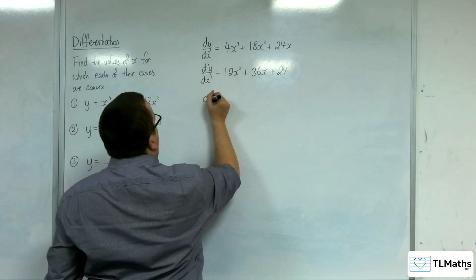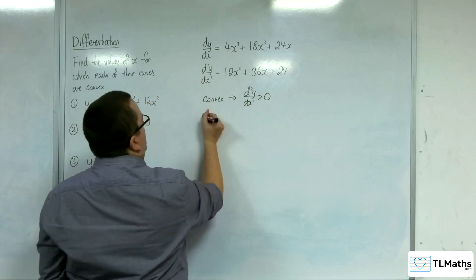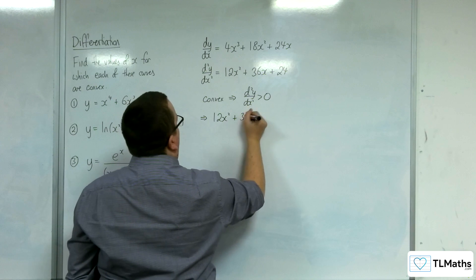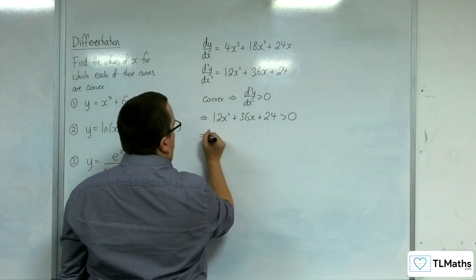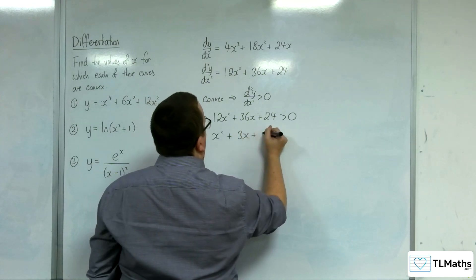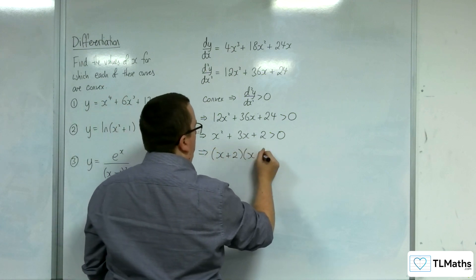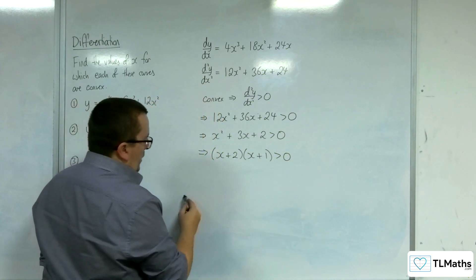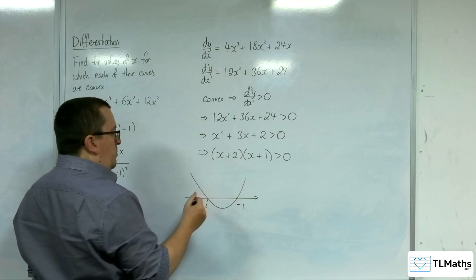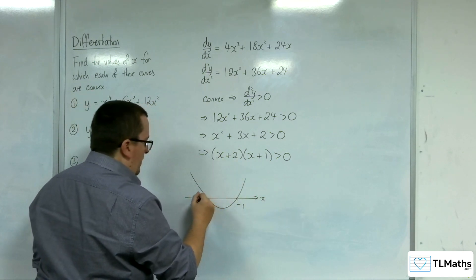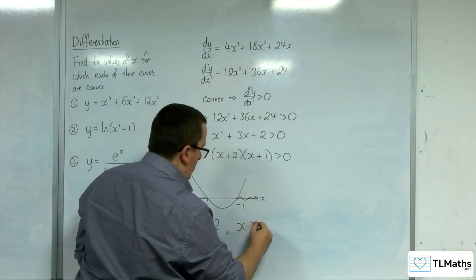The curve is convex when the second derivative is positive. So we want to solve the inequality 12x² + 36x + 24 > 0. We can divide through by 12 to make this easier, so x² + 3x + 2 > 0. This factorises as (x + 2)(x + 1) > 0. Looking at a parabola going through −2 and −1, the parabola is above the x-axis when x is less than −2 or when x is greater than −1.